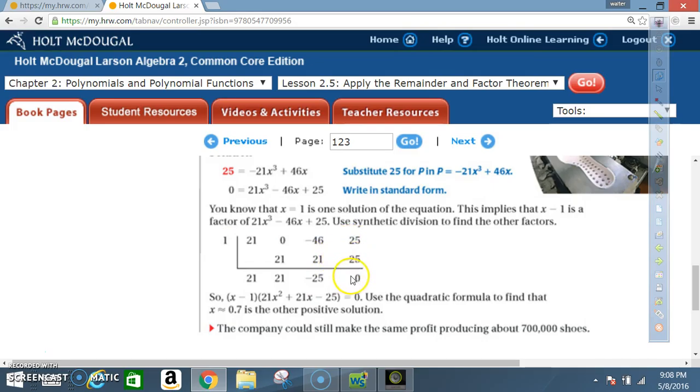So x minus 1 times 21x² plus 21x minus 25 equals 0. Now we got to factor this term right here: 21x² plus 21x minus 25. Notice the numbers here are kind of big and you can't factor anything out.